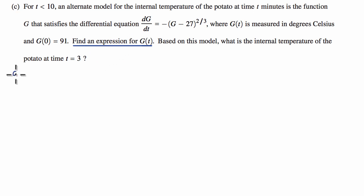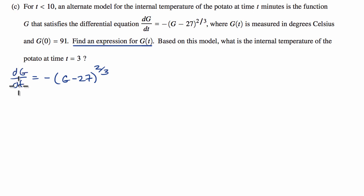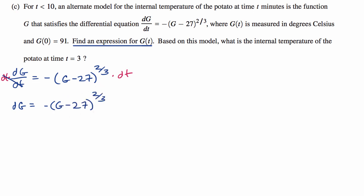Let's rewrite the differential equation: the derivative of g with respect to t is equal to negative g minus 27 to the 2/3rds power. If this is a separable differential equation, I want to separate dg and dt. Treating the differentials like variables, I'll multiply both sides by dt, giving dg equals negative times g minus 27 to the 2/3rds power dt. The goal is to get all g terms on the side with dg, and all t terms on the side with dt.